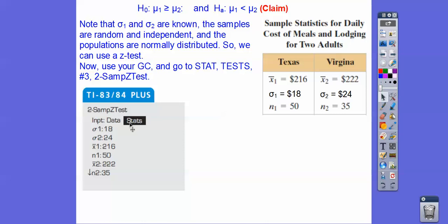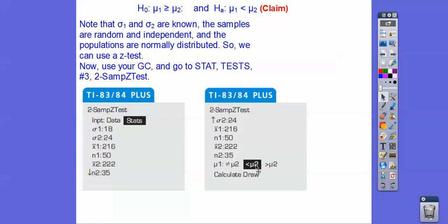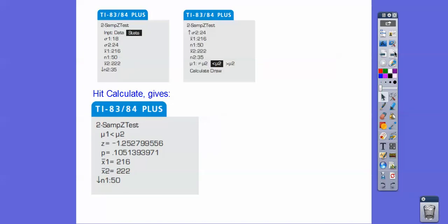We're going to plug in all of this information in our calculators. So go to STAT and then plug in the first standard deviation, the second standard deviation, the first sample mean, the first sample size, the second sample mean, the second sample size. And then scroll down. Make sure that you do less than because that is our claim. And then if you go down and hit calculate, you're going to see those p-values.